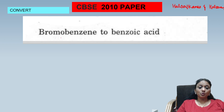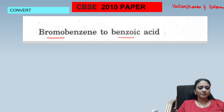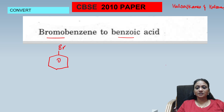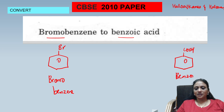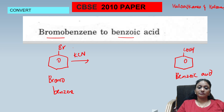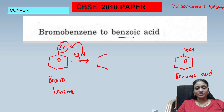The 2010 question: convert bromobenzene to benzoic acid. Write the reactant — bromobenzene — and the product — benzoic acid. There are two or three methods; I'll give you the easy one. Since this is a halogen, try to introduce a nucleophile. I'll take a strong nucleophile like cyanide (CN⁻). Cyanide goes and replaces bromine, giving cyanobenzene, and KBr is released.